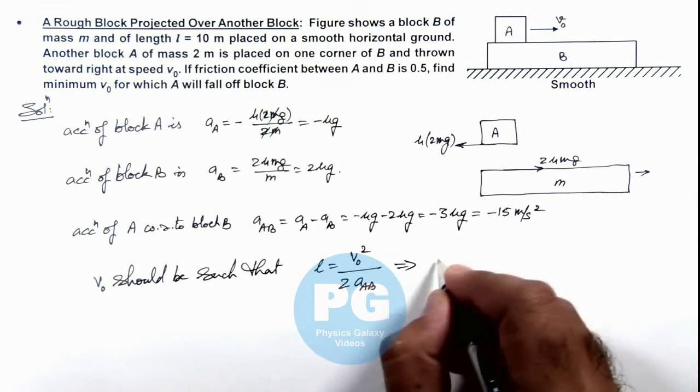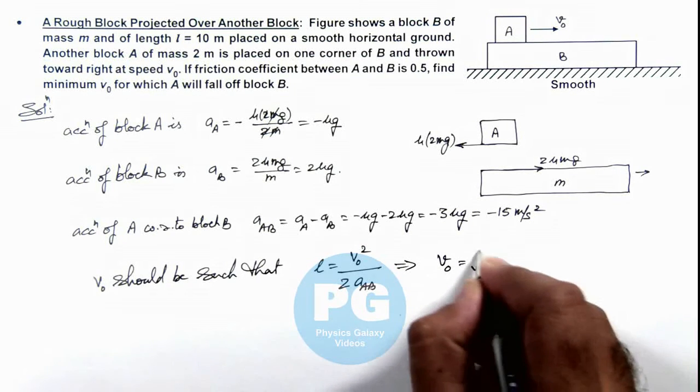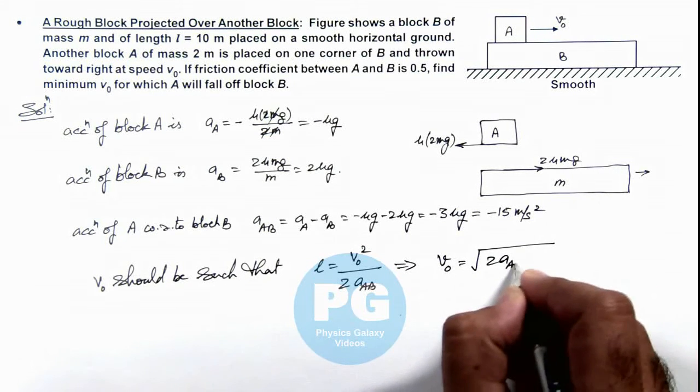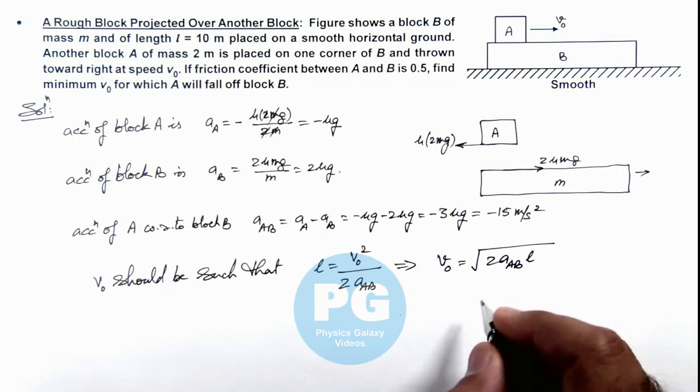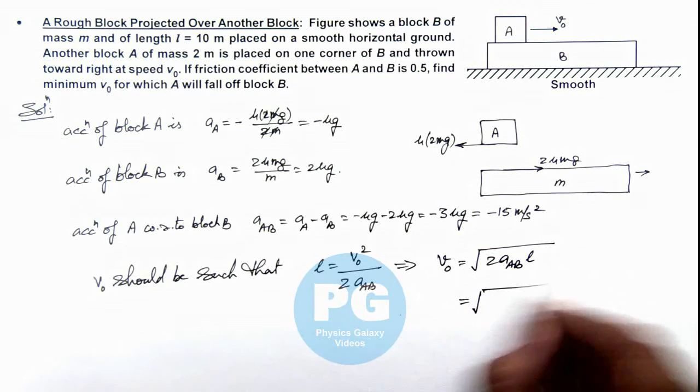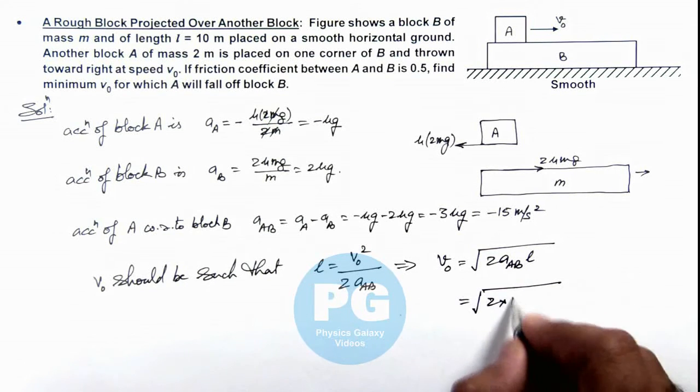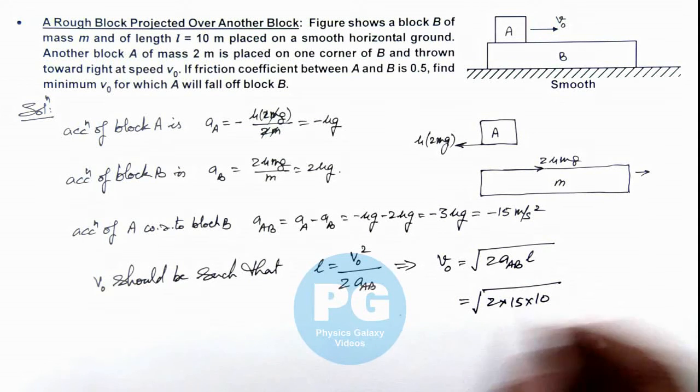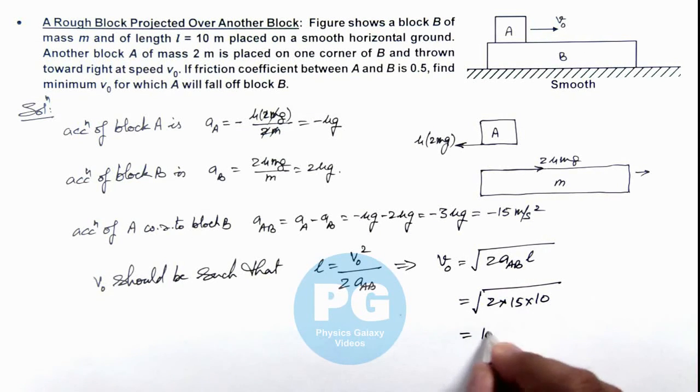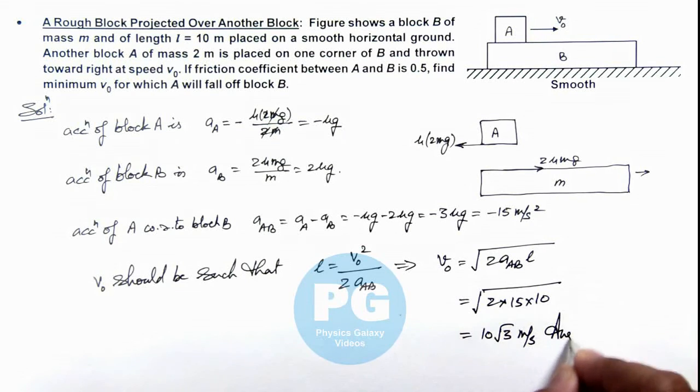That implies the value of v₀ will be the square root of twice of acceleration of A with respect to B multiplied by L. So it is √(2 × 15 × 10). On simplifying, we are getting the result as 10√3 m/s. That is the final result of this problem.